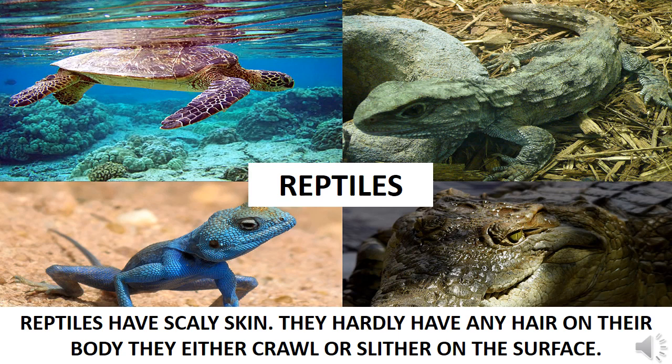After some time, Poonam came back home but she got scared — she saw a lizard on the wall. She shoved away the lizard and started thinking: what kind of animal is a lizard? She asked her mom. Her mother told her that we have some animals called reptiles. Reptiles have scaly skin and hardly have any hair on their body. They either crawl or slither on the surface. Examples include turtle, lizard, crocodile, alligator and snake. They all are reptiles.